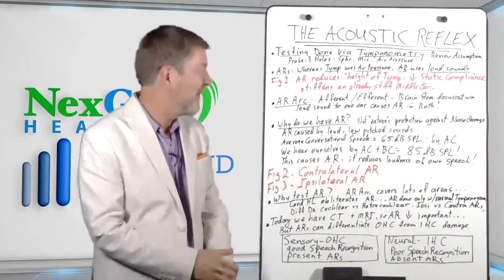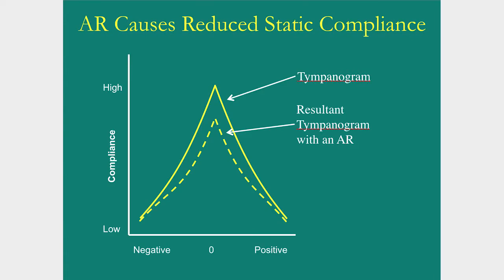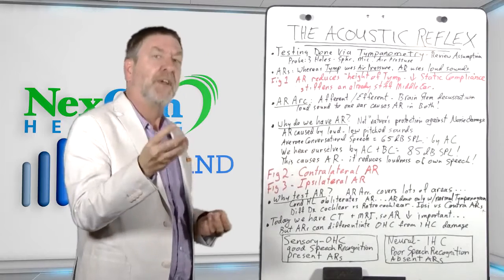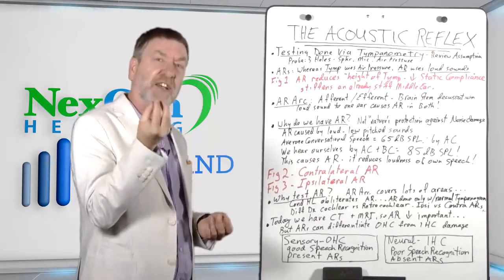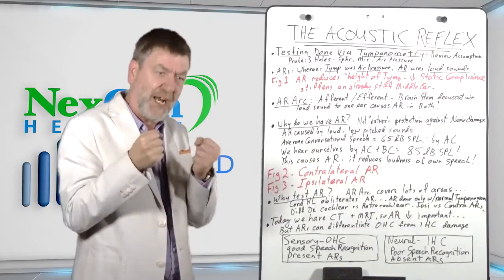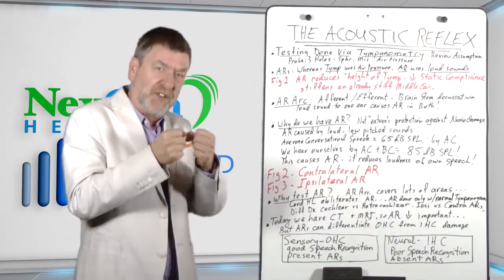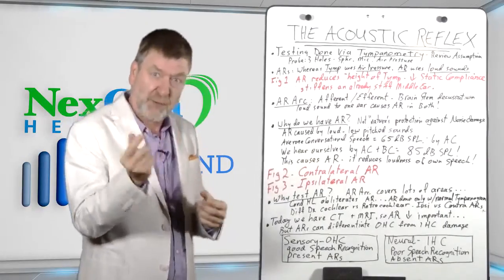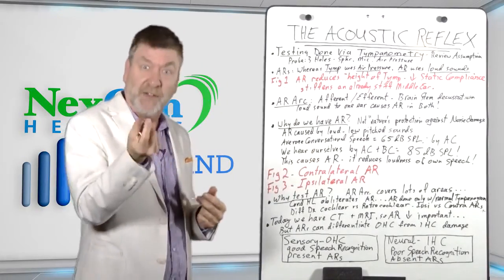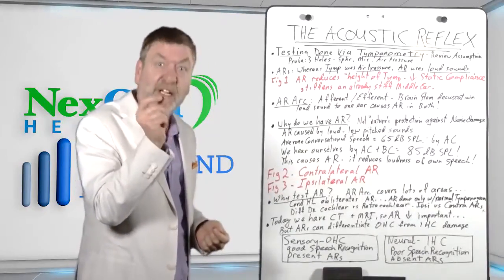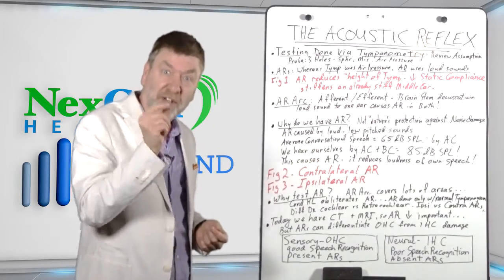This is the acoustic reflex. Figure one shows that with tympanometry, the acoustic reflex temporarily results in a reduction of the height or the static compliance of the tympanogram. The acoustic reflex, a set of tiny muscles contracting in the middle ear system to tighten the already stiff middle ear, thus reducing its efficiency, thus actually causing a temporary slight degree of conductive hearing loss.